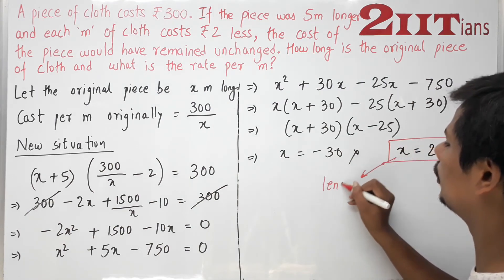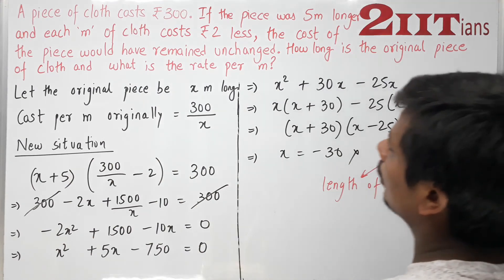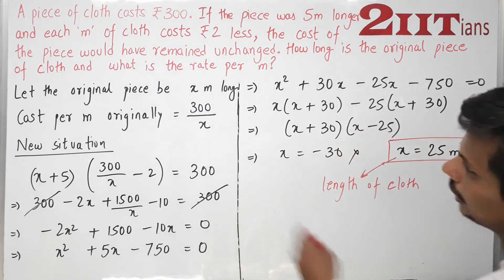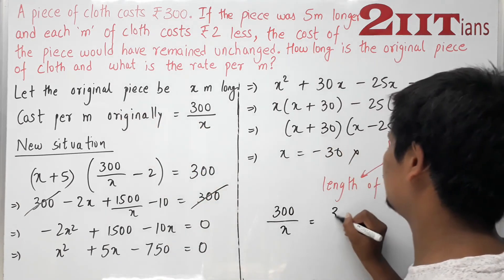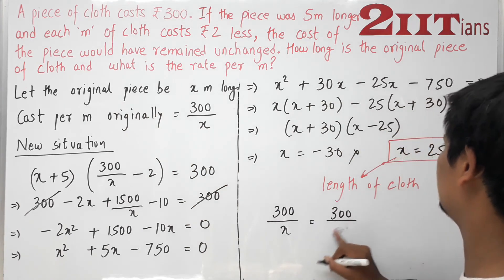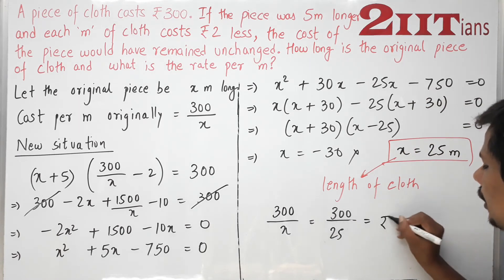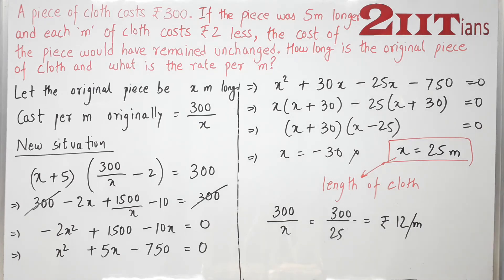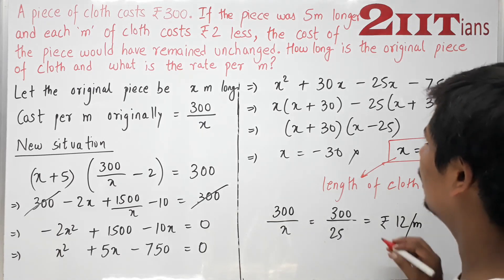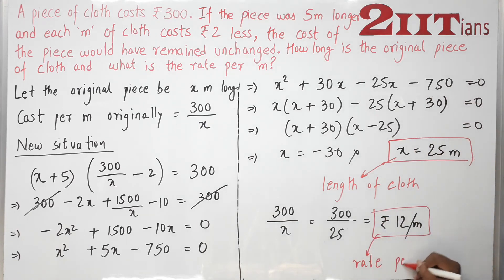So x = 25 meters is the original length of the cloth. The rate per meter originally was 300 divided by x, which is 300 ÷ 25 = Rs. 12 per meter. This is the rate per meter, and we have solved this question.